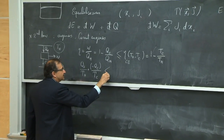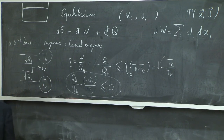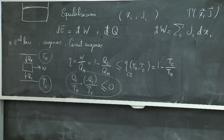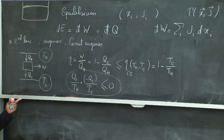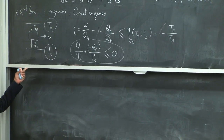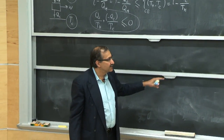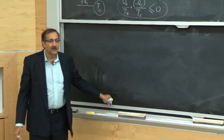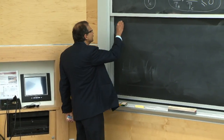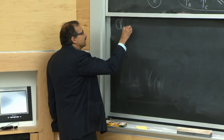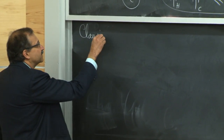Because of this inequality, we can write it as less than or equal to zero. This is an example of a much more powerful result — the Clausius theorem. Let's start with writing what that theorem is and how it relates to this simple expression.